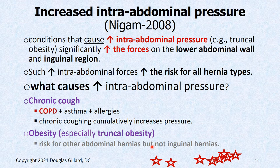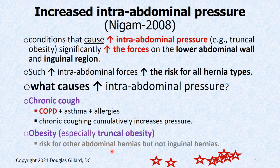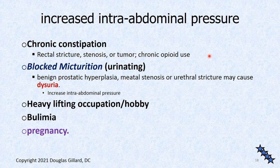Another risk factor is increased intra-abdominal pressure. Chronic cough, like people with COPD, is a well-known cause. Obesity increases intra-abdominal pressure and raises risk for Spigelian and umbilical hernias. Interestingly, obesity does NOT increase the risk for indirect inguinal hernia — we'll discuss why. Chronic constipation and straining can push intestine through Hesselbach's triangle. Difficulty with urinary outflow, like urethral stenosis, can also be a factor.